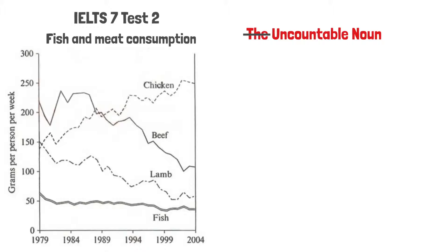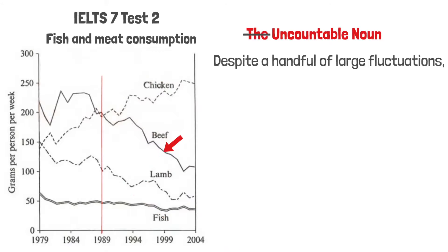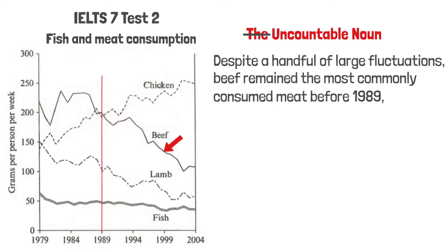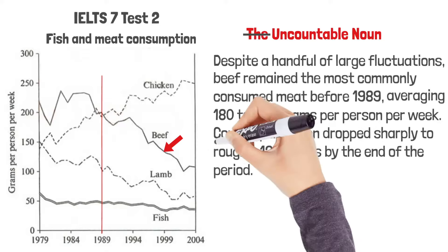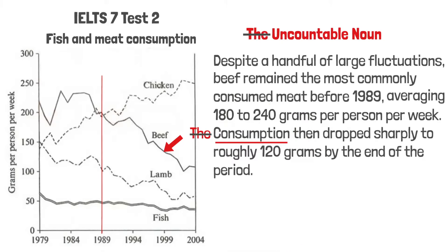Here's another example. This graph shows fish and meat consumption. When describing beef consumption, we can say: despite a handful of large fluctuations, beef remained the most commonly consumed meat before 1989, averaging 180 to 240 grams per person per week. Consumption — not 'the consumption' — then dropped sharply to roughly 120 grams by the end of the period. 'Consumption' is uncountable, so the definite article is unnecessary. Readers understand that consumption in the second sentence refers to beef. So when using an uncountable noun in a task 1 report, think about whether you really need the definite article.